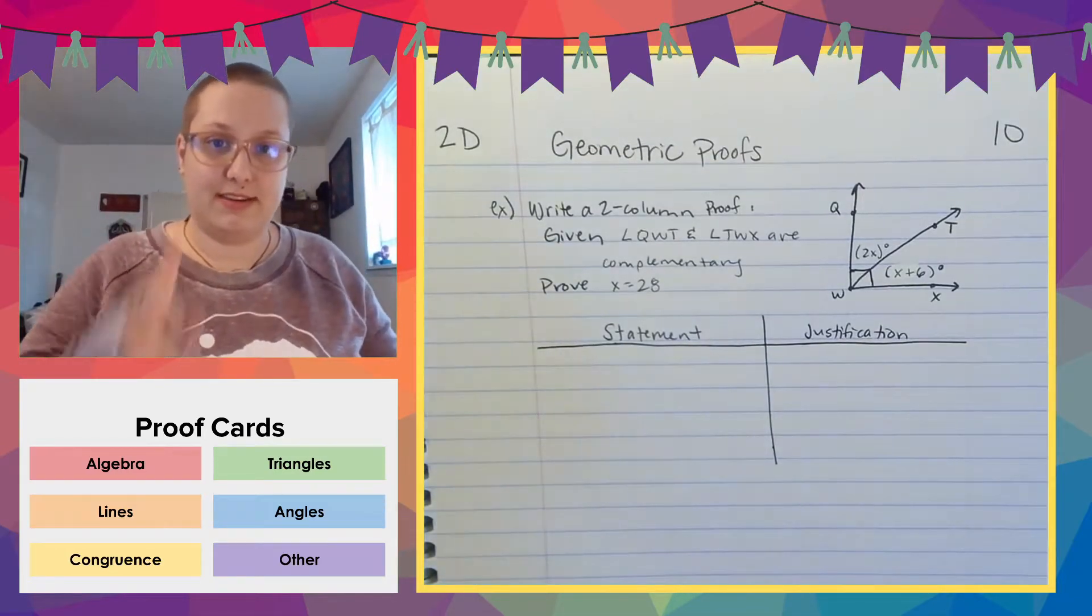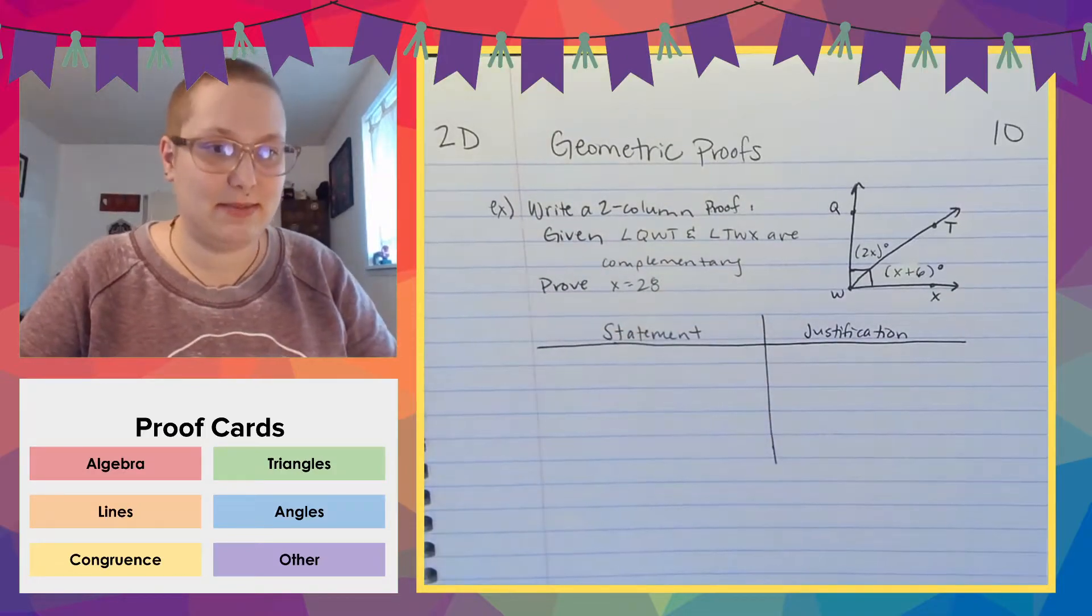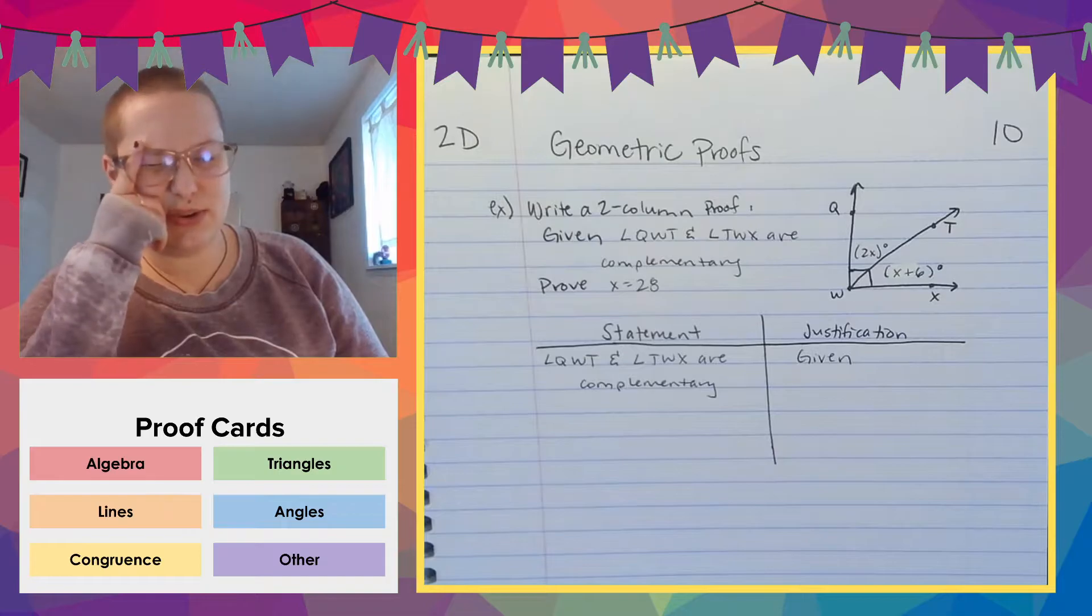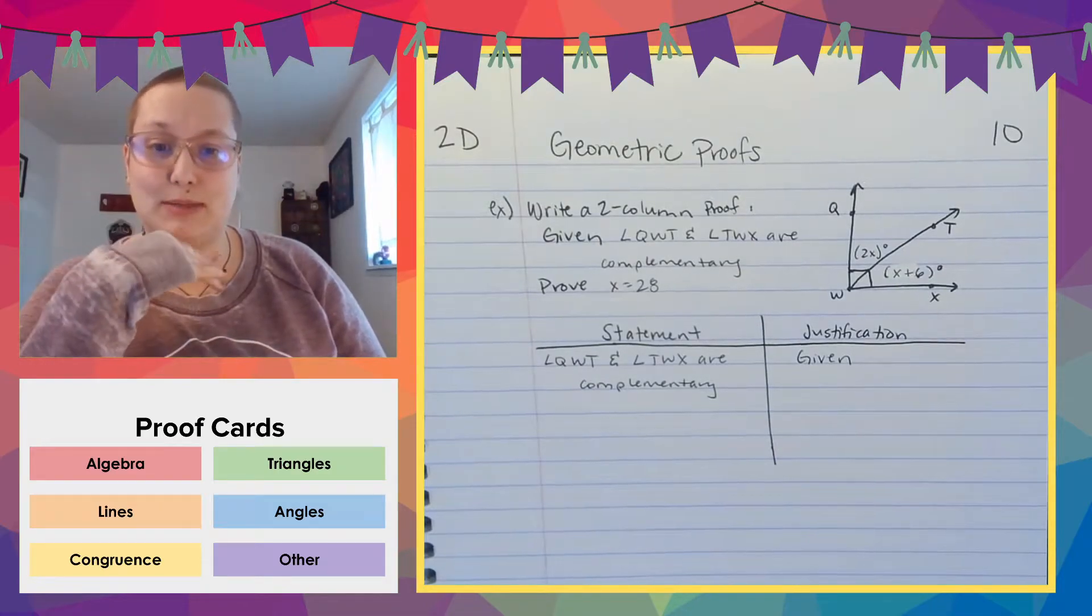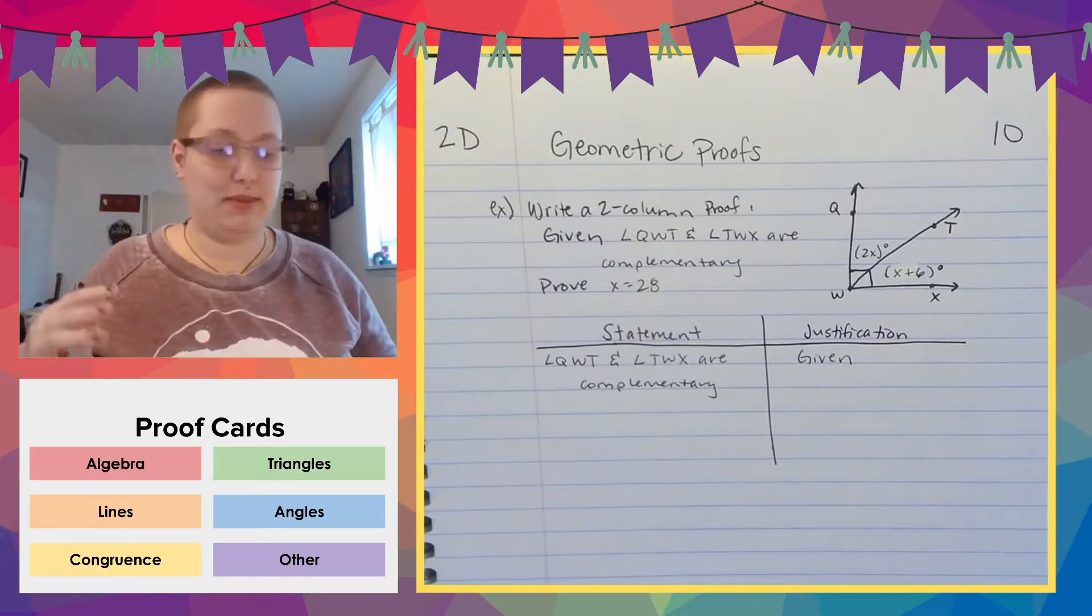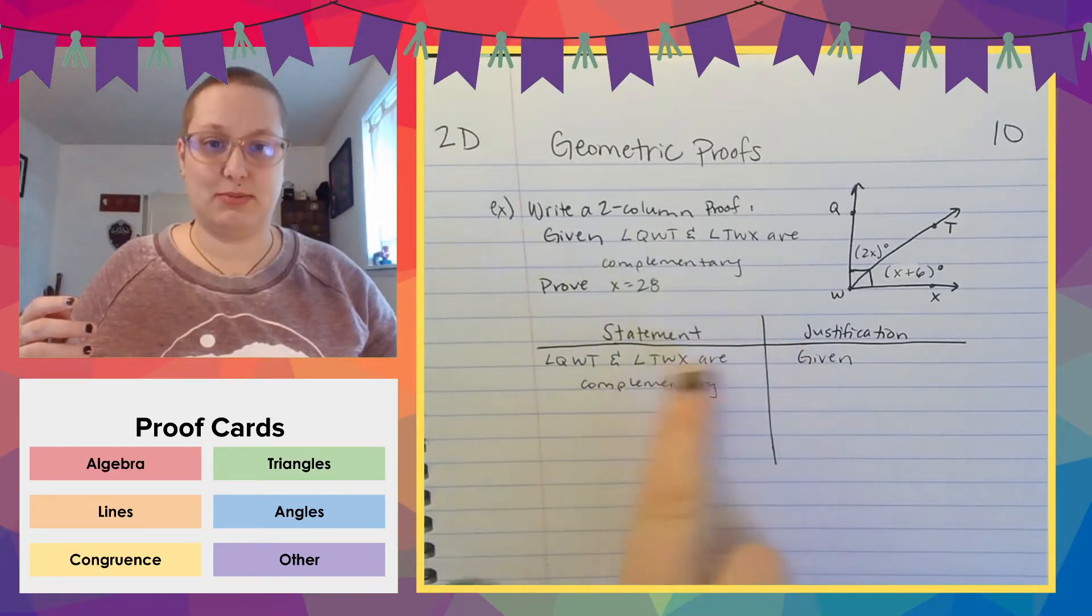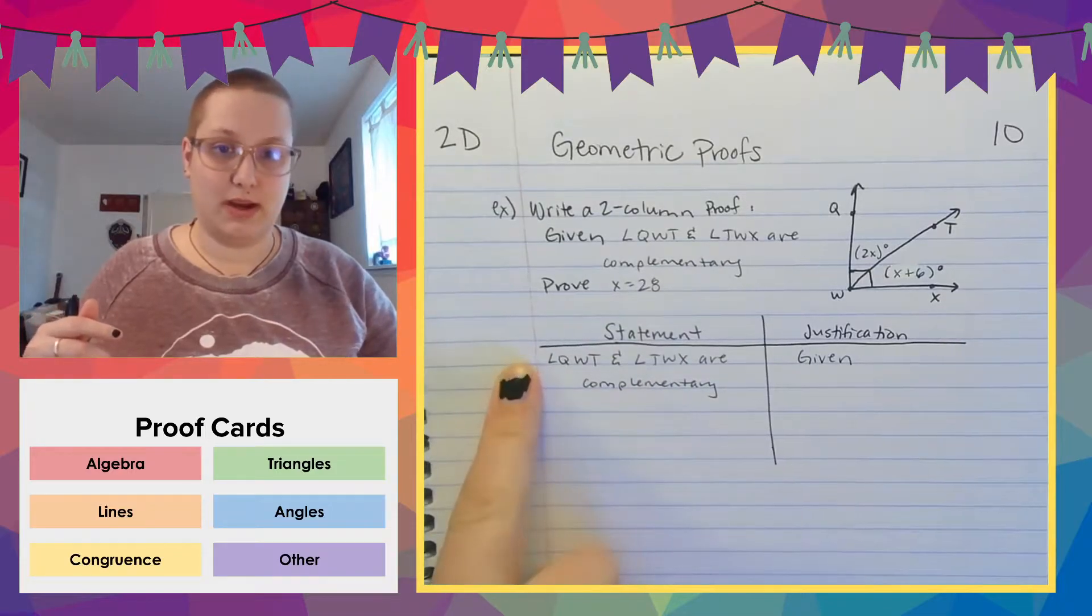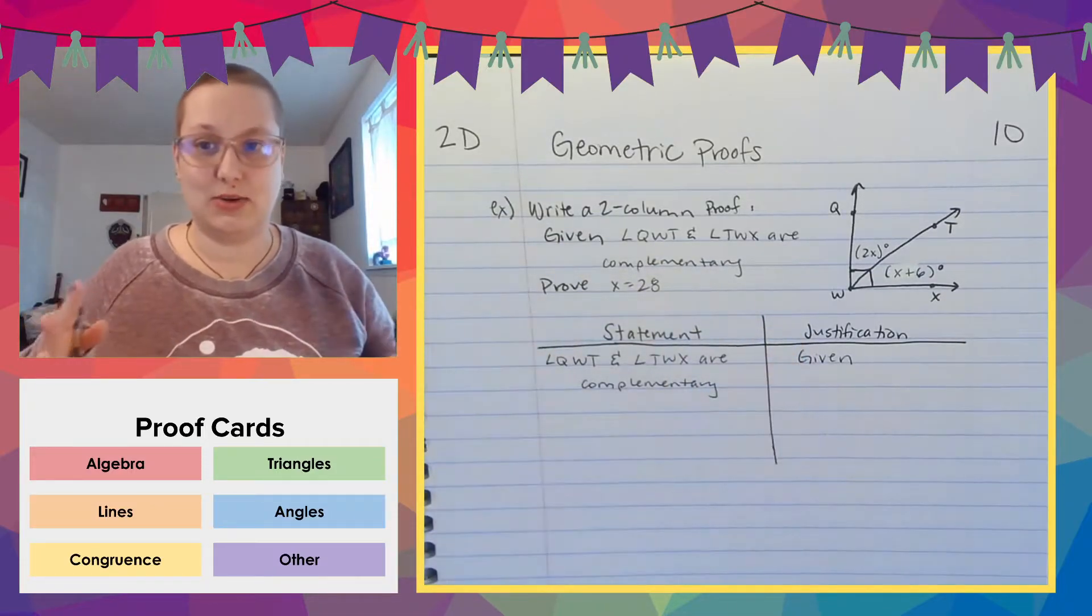Okay. We always start with what's given. So here's our given statement. Angle QWT and TWX are complementary. That was given to us. This is why some people will number them because this is a little bit longer. And so I just want to show that these are the same. I did it. So it's indented a little bit, but you could also go one here and one here. That's totally fine.